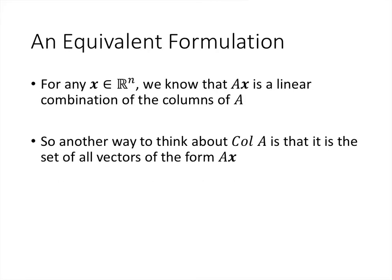Another way to think about the column space is that for any vector x in R^n, we know that A times x is a linear combination of the columns of A. So another way to think about the column space of A is that it's all of the vectors of the form A times x.